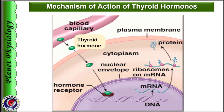The mechanism of action of thyroid hormones is very similar to the genomic action of steroid hormones. The only difference is that for thyroid hormones, the receptors are present within the nucleus itself. So hormone-receptor complex is formed within the nucleus, which then activates specific regions of the DNA and initiates the process of transcription, translation and protein synthesis.